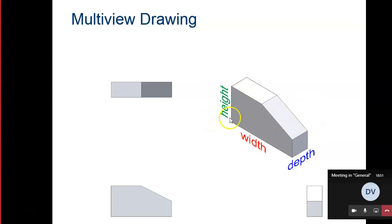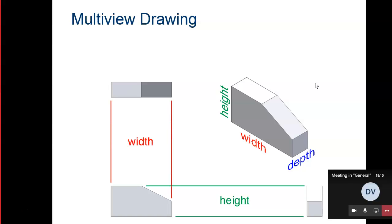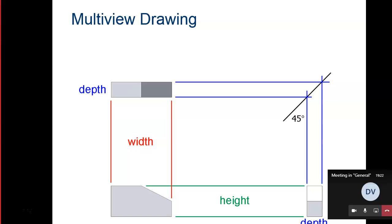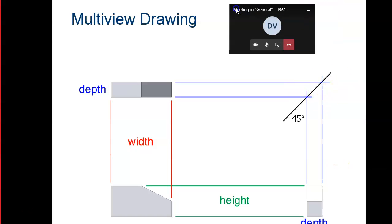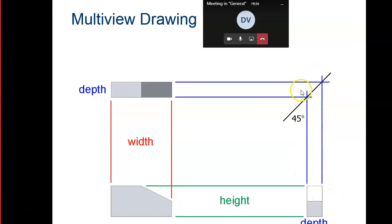In your isometric view, the height appears between the top and the bottom, the width appears between the left side and the right side, and the depth appears between the front and the back. These views are also aligned in terms of depth. If you were to extend the boundary of the depth on the top view and extend the boundary of the depth on the right side view, those lines would intersect at a 45-degree angle. That's how depth is related in the top view and the right side view.